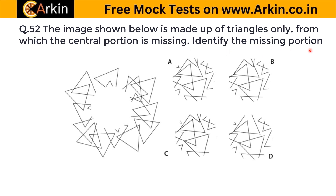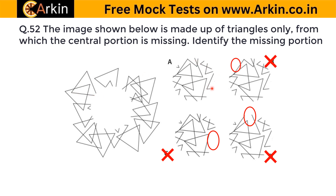The image below is made up of triangles and the central portion is missing — identify the missing portion. Instead of checking each option against the full image, compare options A, B, C, D among themselves. A part present in all other options is missing in C, and there is a half triangle visible, so C is wrong. A part of a triangle is in A and B but missing in D, so D is wrong. Comparing A and B, a small triangle is missing in B, so A is correct.